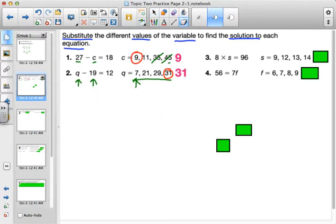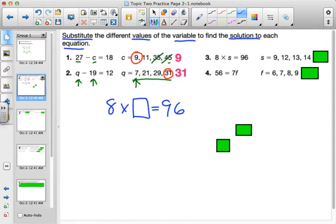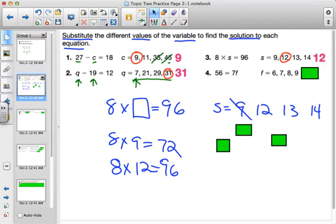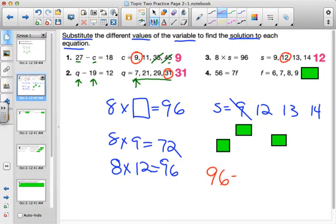Let's look at the next problem, number 3. They tell us that you have 8 times some unknown number equals 96. Then you had the option of using S could have been 9, it could have been 12, 13, or 14. So in this situation, you know that 8 times 9 isn't going to work because that's only going to give you 72. And then you try 8 times 12, and that would give you the number that you need, which is 96. So the correct answer is 12. And you could have used the inverse operation, and you could have taken 96 and divided by 8, and you would have gotten 12 also as your answer.